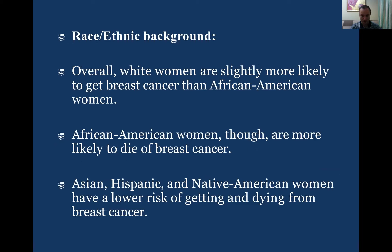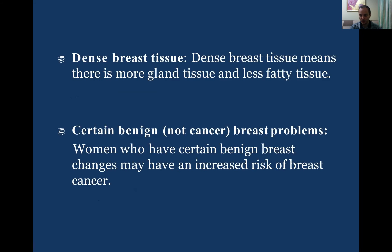Race and ethnic background also matter. Overall, white women are slightly more likely to get breast cancer than African-American women, but African-American women are more likely to die of breast cancer because they have more aggressive forms more frequently. Hispanic and Native American women have a lower risk of breast cancer occurrence. Dense breast tissue — meaning a lot of glandular tissue — also correlates with a higher risk of breast cancer development.